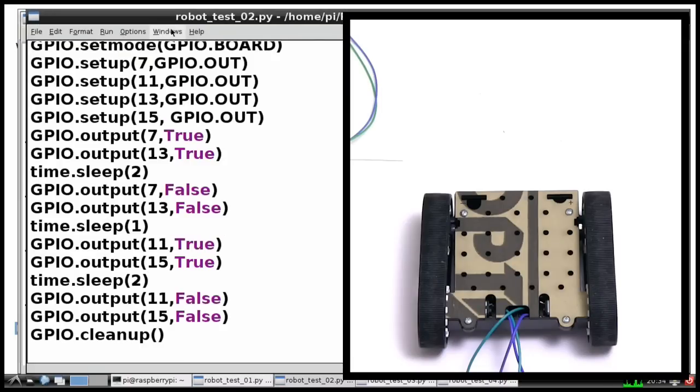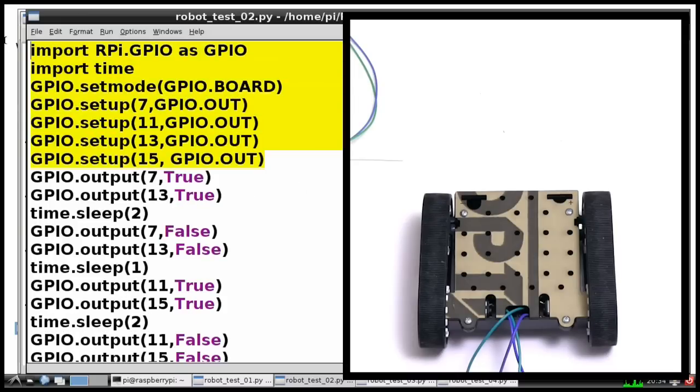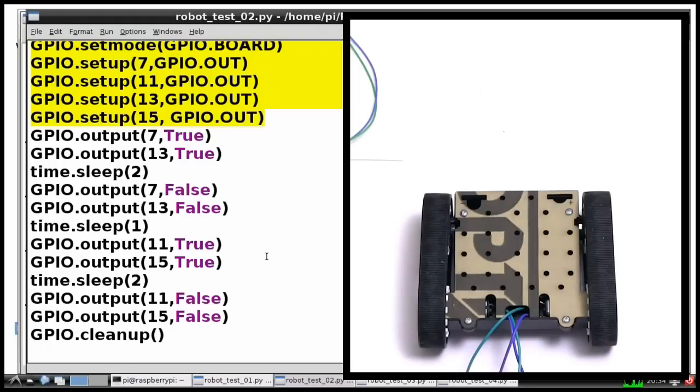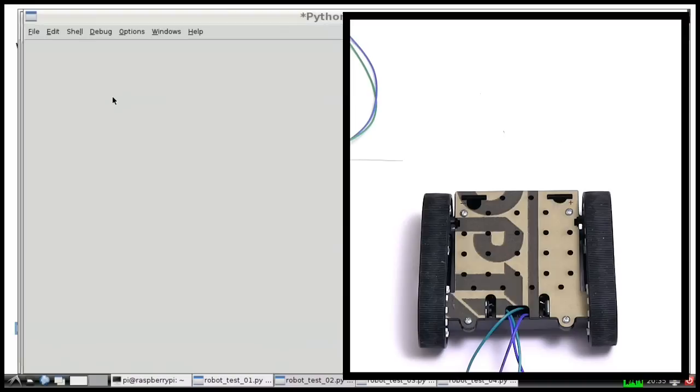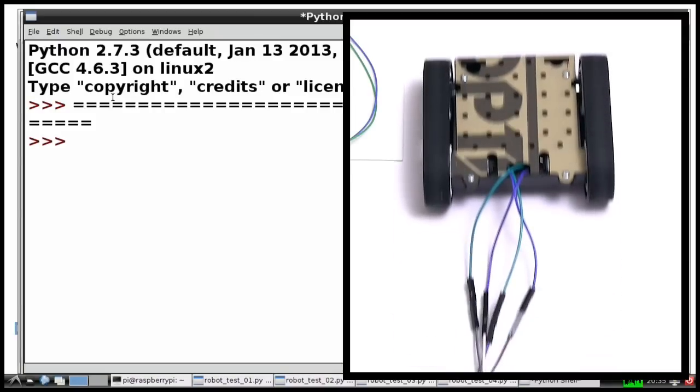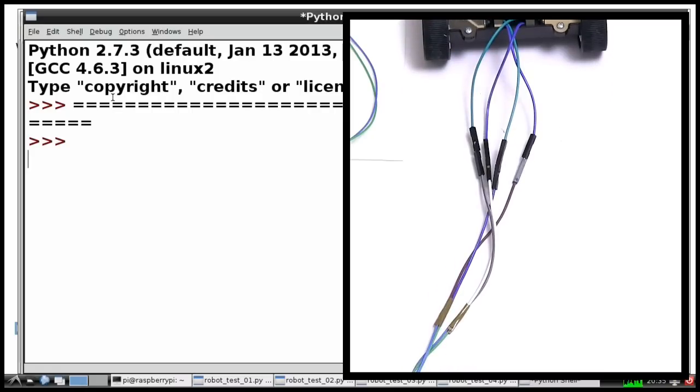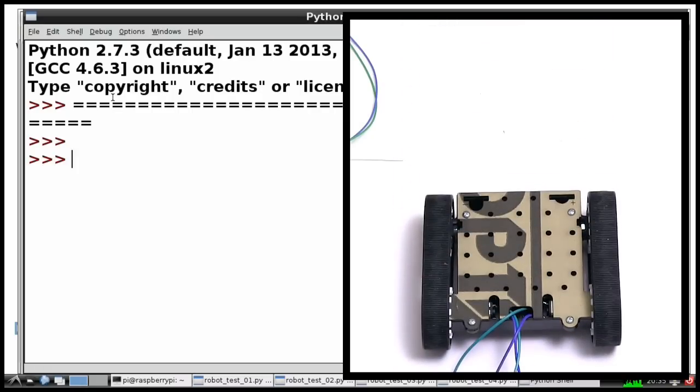Let's do something slightly more complicated. Here we've got another piece of code, same setup on the front, but here I'm going to turn on two motors together. So I'm going to turn on pins 7 and 13 to drive us forward, wait for two seconds, turn those pins off, wait for a second and then turn on pins 11 and 15 to bring us back again for two seconds and then again turn the things off and clean up the output. So we'll run that code, see what that does. Should drive the robot forward for two seconds and back for two seconds. Forward, back. It seems to be working.